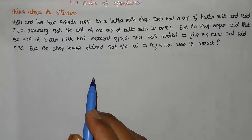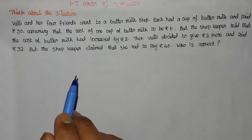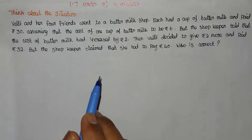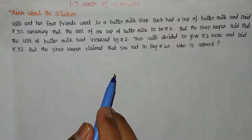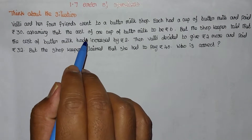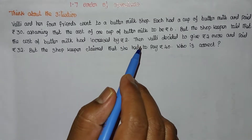Hello students. In this video we are going to learn Class 6, Chapter 1, Numbers. The topic is 1.7, Order of Operations.